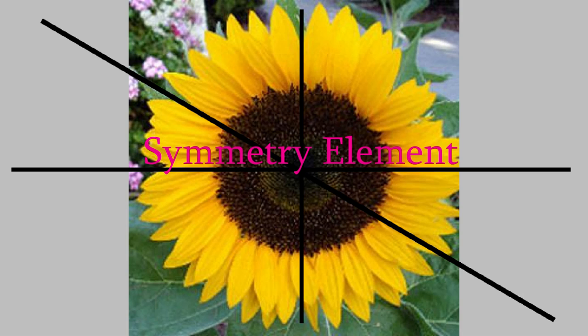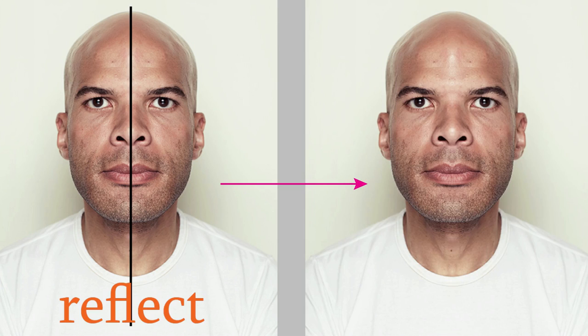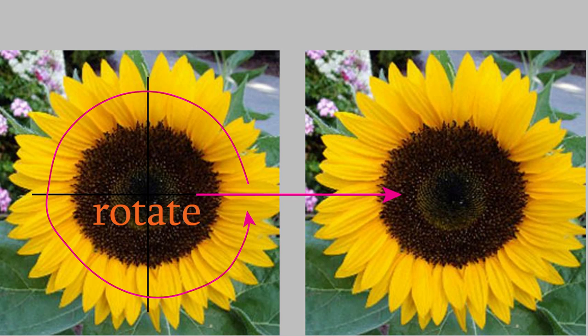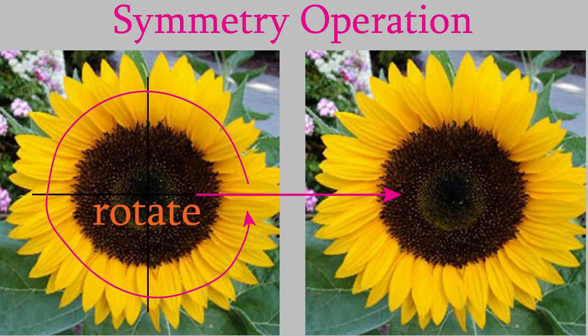By now you should be getting a sense of what we mean when we talk about symmetry elements. Let's make it more concrete by making a list of the different types of symmetry element, and we'll use some real molecules to illustrate them. Every symmetry element tells us what we must do to the object in order to make it look the same as when we started. To make the person's face look the same, we must reflect it in the vertical mirror plane. The action we must take — such as reflecting or rotating — is called a symmetry operation.